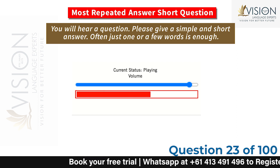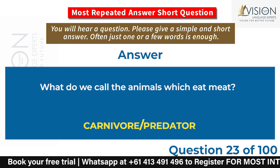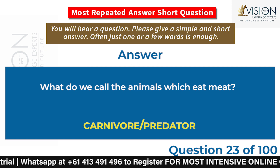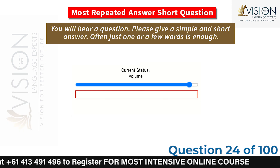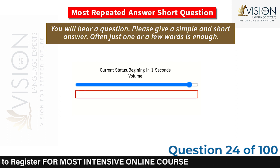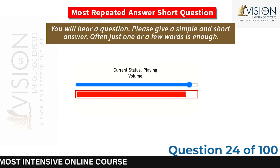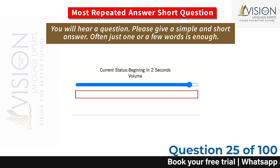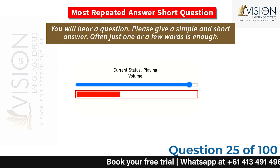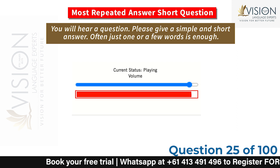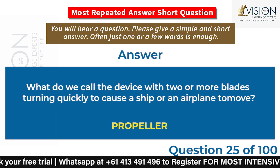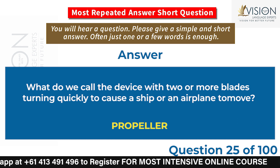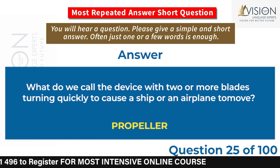What do we call the animals which eat meat? Carnivore / predator. What do we call a scientist who studies planets and stars? Astronomer. What do we call the device with two or more blades turning quickly to cause a ship or an airplane to move? Propeller.